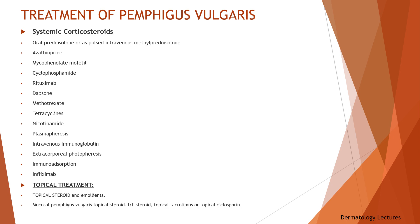Topical therapy for cutaneous pemphigus may include topical steroids and emollients. Treatment of mucosal pemphigus vulgaris may include various formulations of topical steroid, intralesional steroid, topical tacrolimus, or topical cyclosporine.